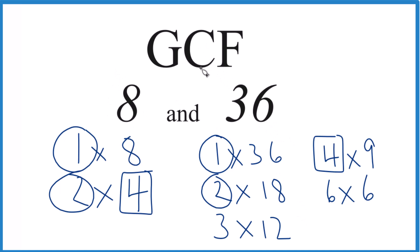That's it. The GCF for 8 and 36 is 4. There are other ways you could do this, like prime factorization, but unless you have a big number, this works really well.